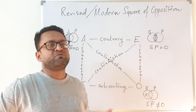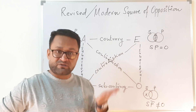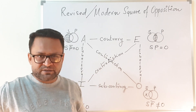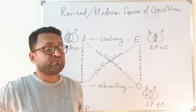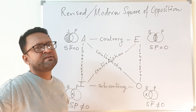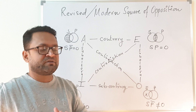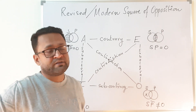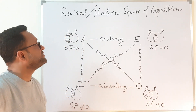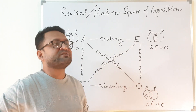Given that understanding, traditional logic went through a change — modern logic came to the fore and took away a lot of things available from traditional logic. In this lecture we will be discussing it from the square of opposition's point of view. We have already discussed the traditional square of opposition, and now we are coming to the modern square of opposition.